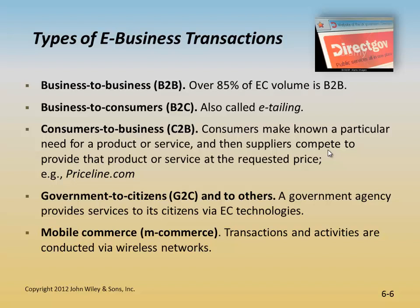Business-to-Business is where both the seller and buyer are business organisations. Business-to-Consumer is where the seller is the organisation and the buyer is the individual. Consumer-to-Business is where a consumer has a particular need and suppliers compete to provide that product or service at a requested price. Government-to-Citizen, and others such as Government-to-Government and Government-to-Business, provide services to citizens via e-commerce technology. Mobile commerce is conducted via wireless networks on Wi-Fi.